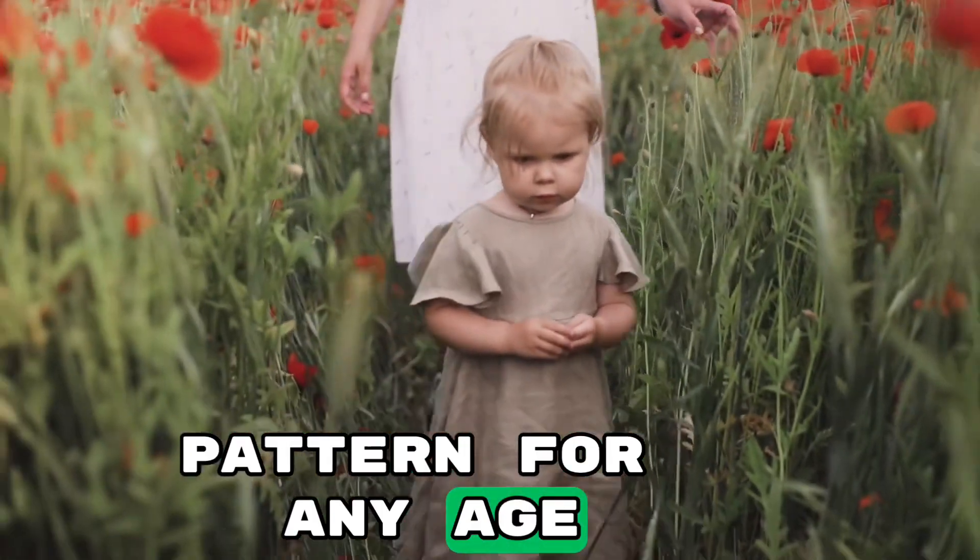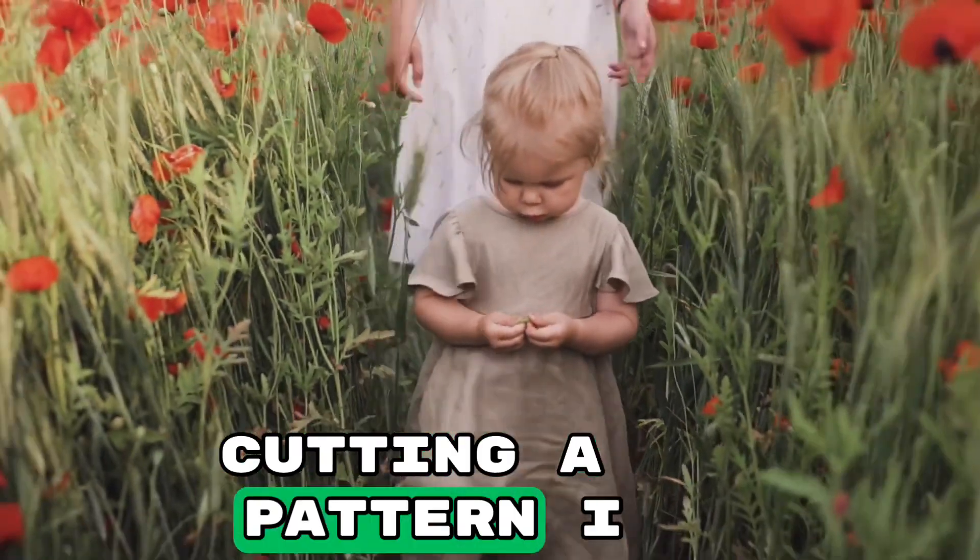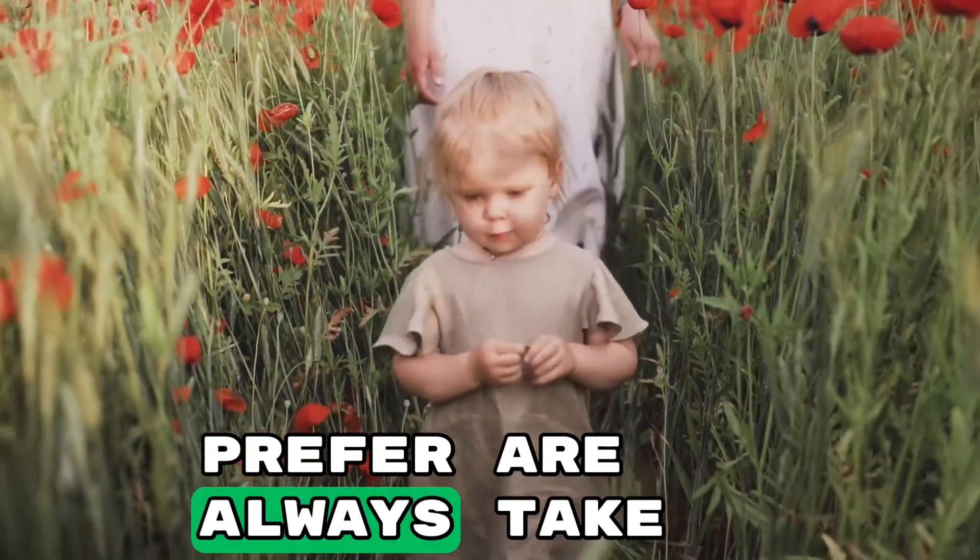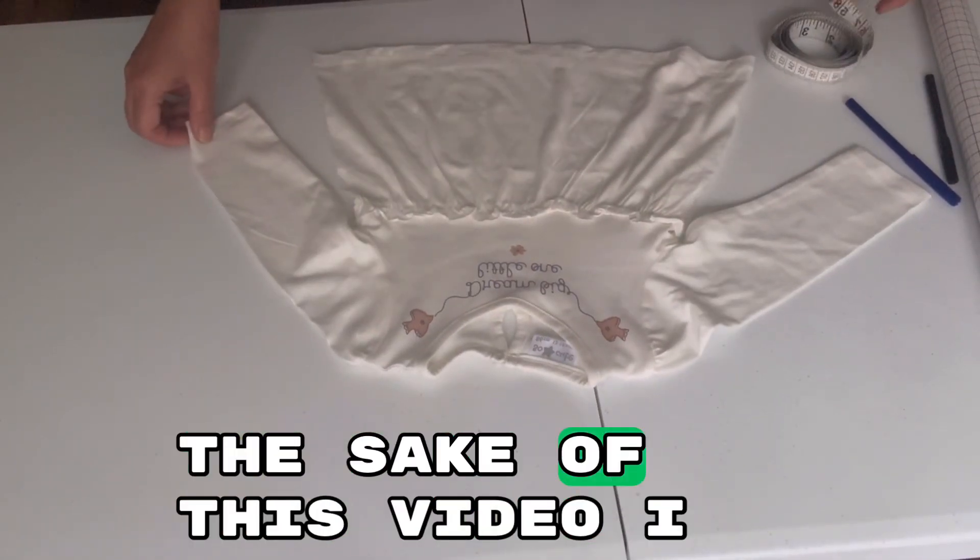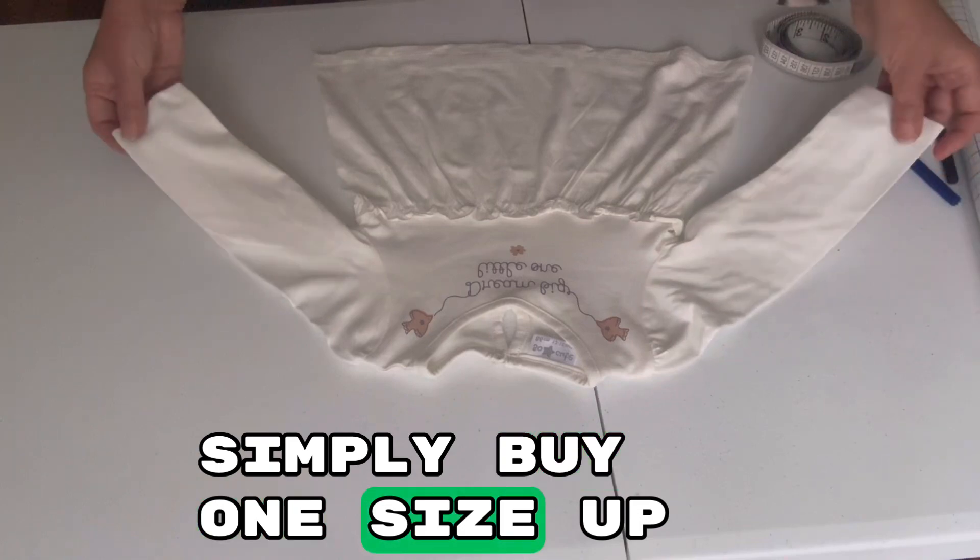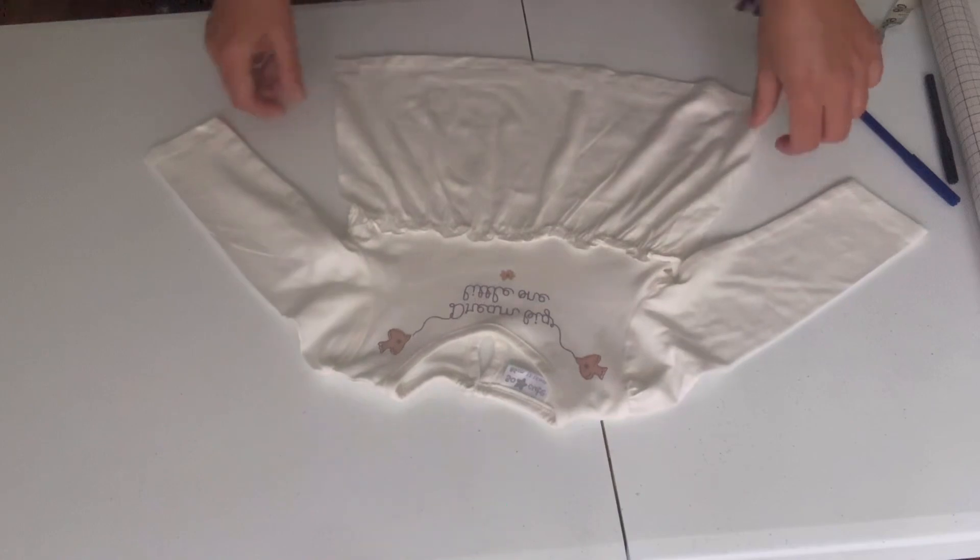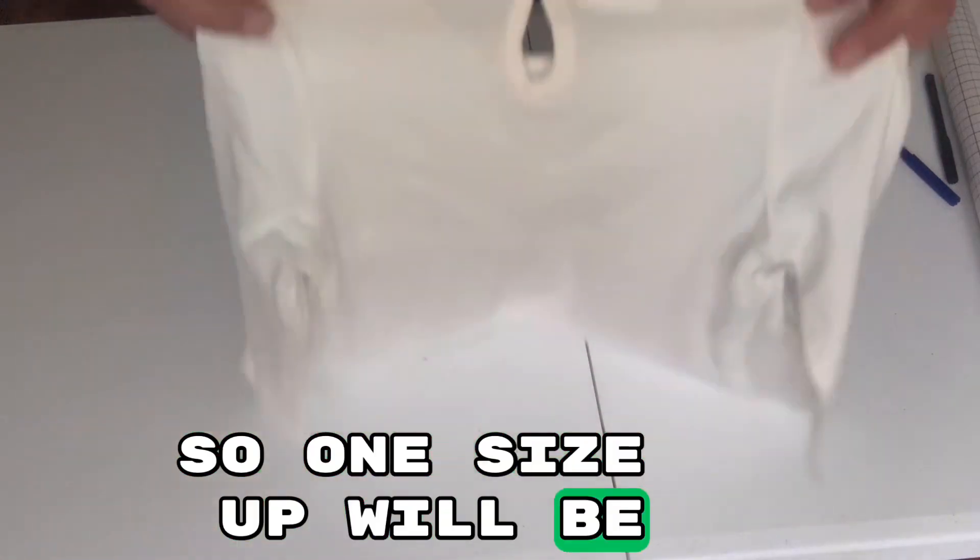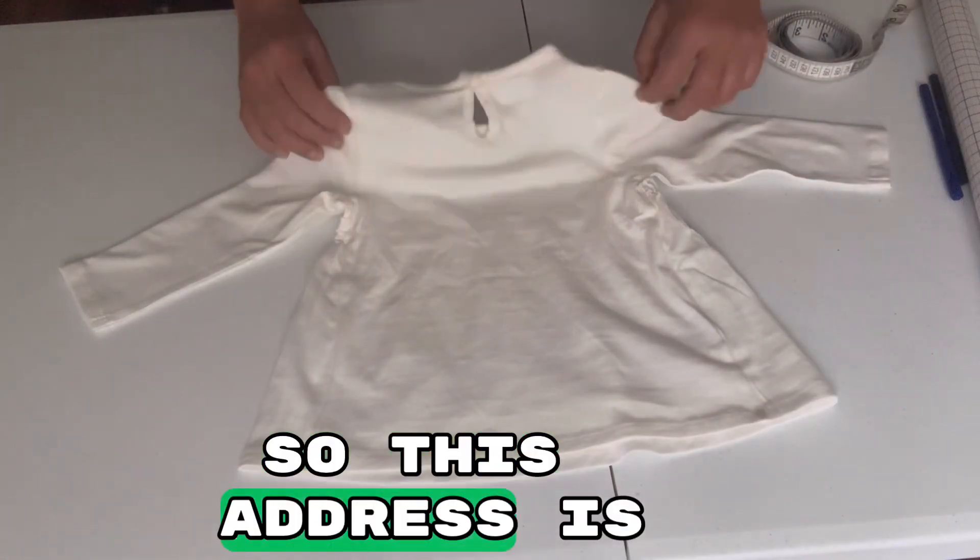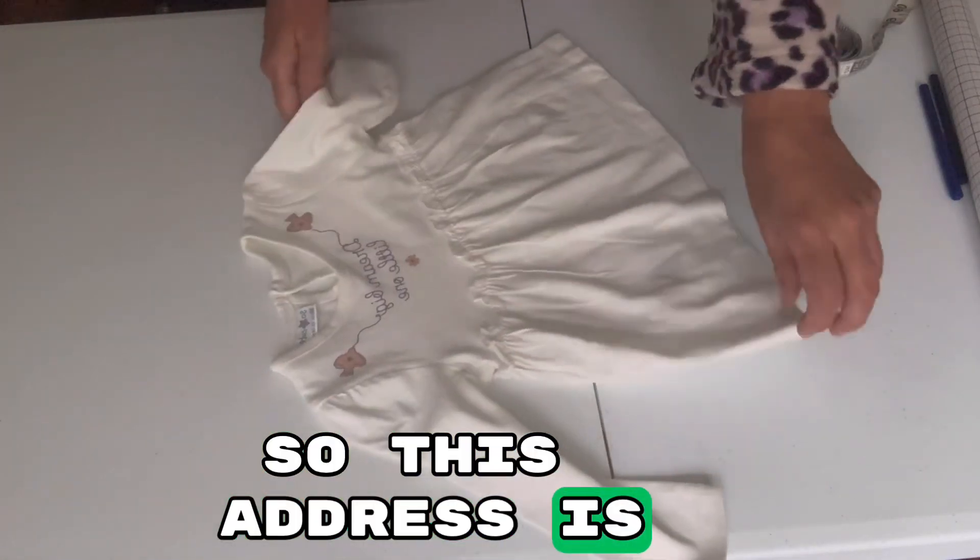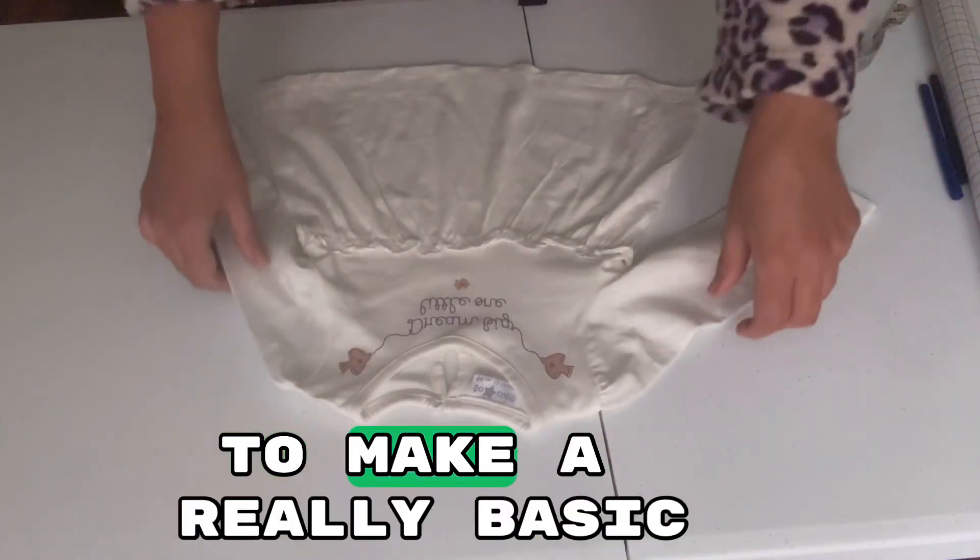For cutting a pattern I prefer to always take one size up. For the sake of this video I simply bought a one size up dress. For example, if your baby is one year old, one size up will be 12 to 18 months old. This dress is for a 12 to 18 month old baby and I want to make a really basic bodice pattern from this dress I got from the shop.